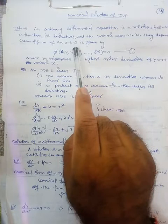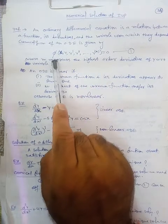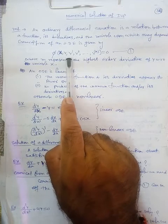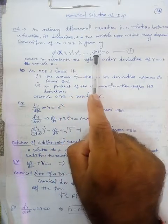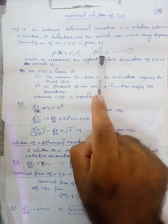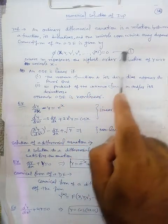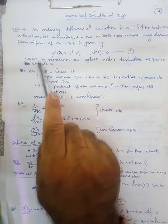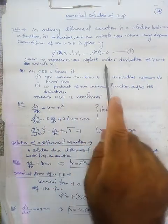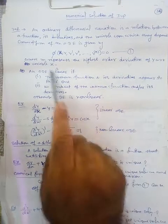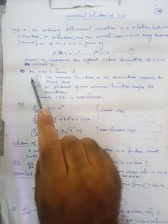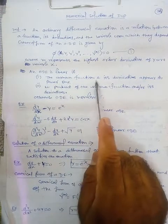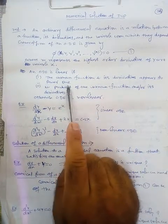ODE means ordinary differential equation. This general form is given by phi of X, the independent variable, Y the dependent variable, and its first, second, up to M-th order derivatives equals zero. Here M represents the highest order derivative of Y with respect to X. An ODE is linear if the unknown function and its derivatives appear to power 1.